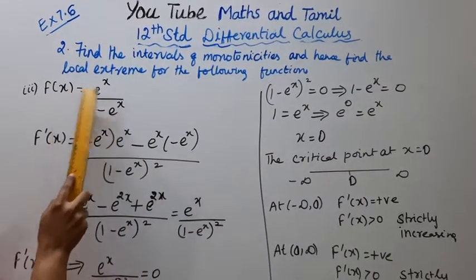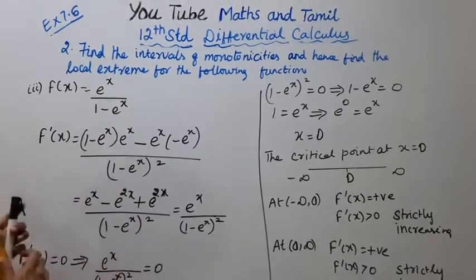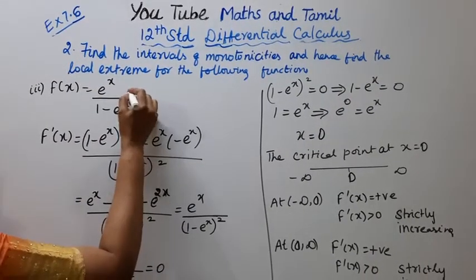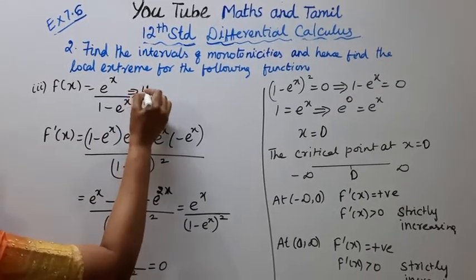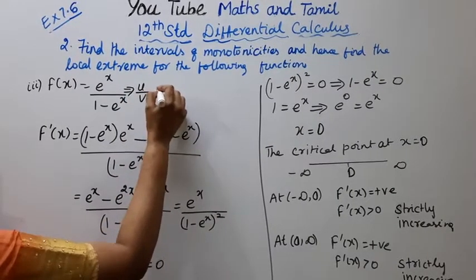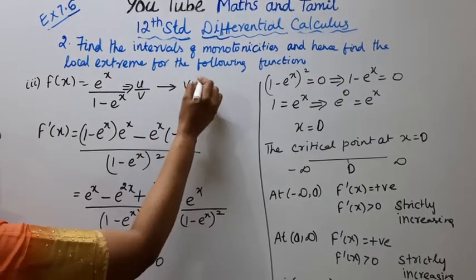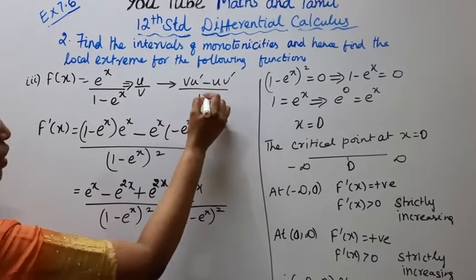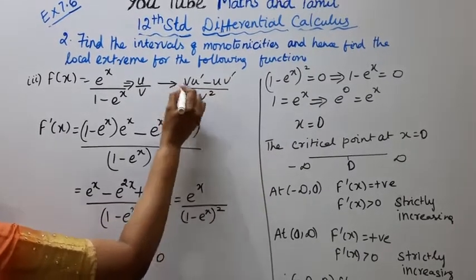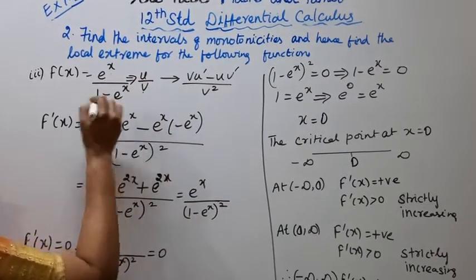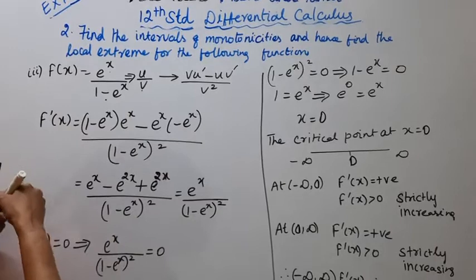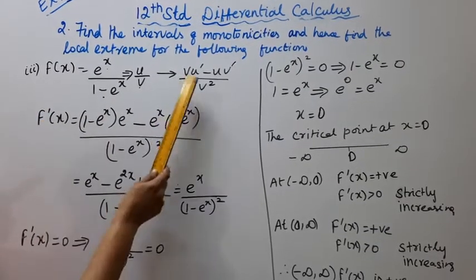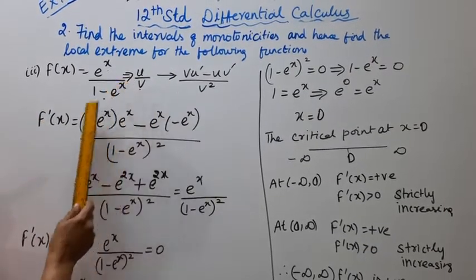f(x) = e^x / (1 - e^x). This is of the form u/v. Differentiating gives (v·u' - u·v') / v². Here u is the numerator and v is the denominator. We will find f'(x) using the quotient rule.